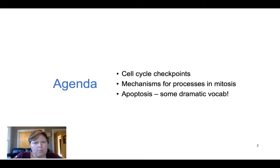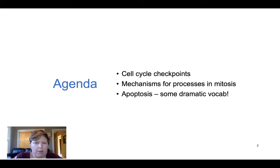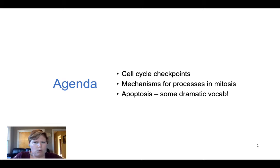There are specific checkpoints in the cell cycle that we'll talk about today, why they're important, and how they're maintained. We'll also talk a little bit about the mechanisms for mitosis. We'll dig into what we've learned the past couple weeks and put that together with how we can move through mitosis. And then at the end, we talk about apoptosis — brace yourselves for some really dramatic vocabulary. It's kind of fun.